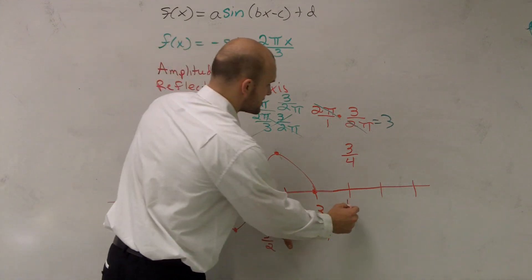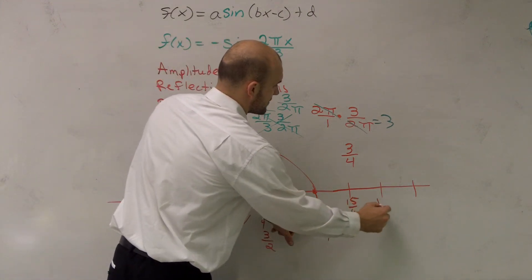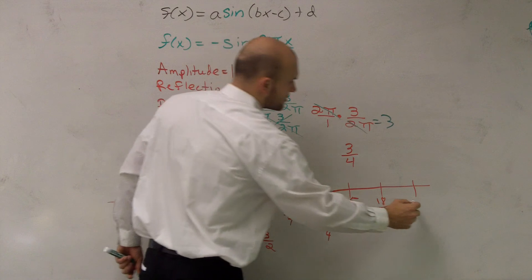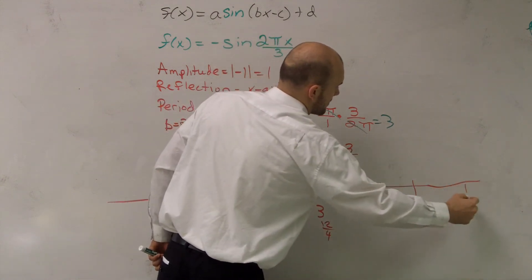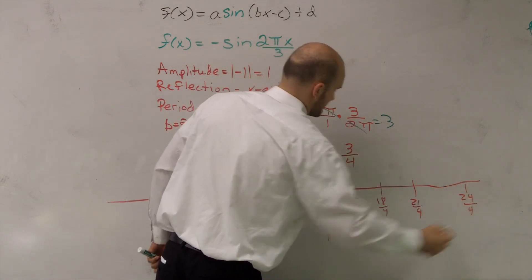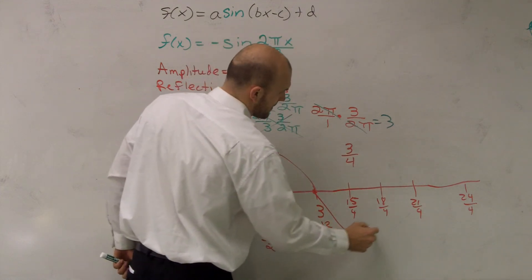So the next one is 15 over 4. 18 over 4. 21 over 4. 24 over 4. Just keep on continuing doing it.